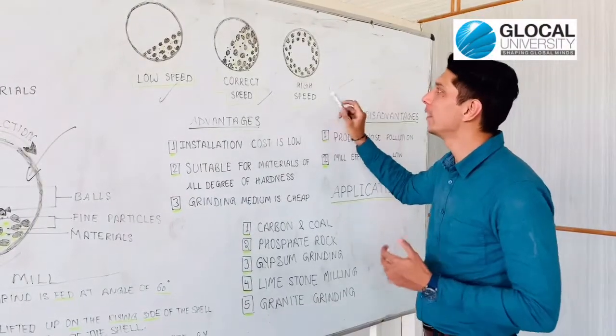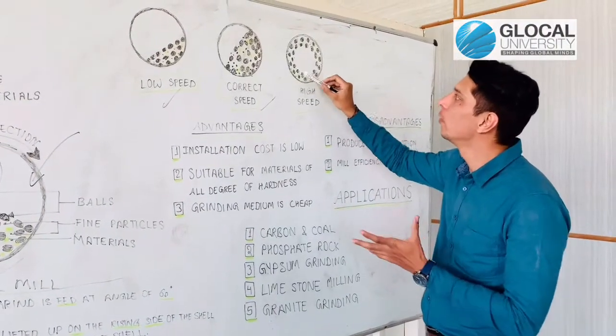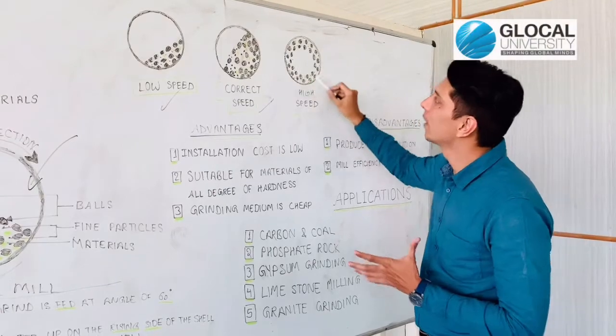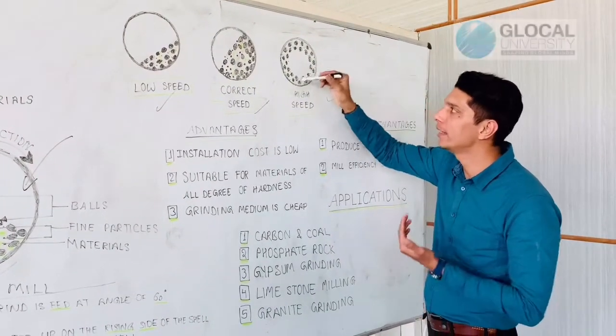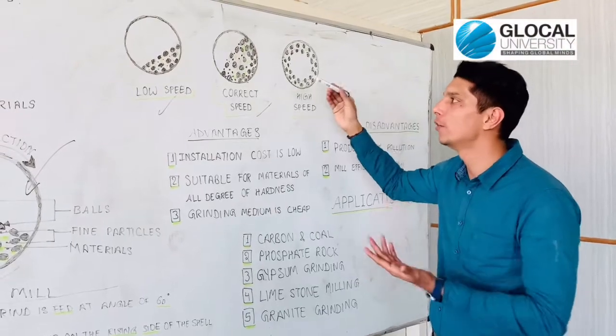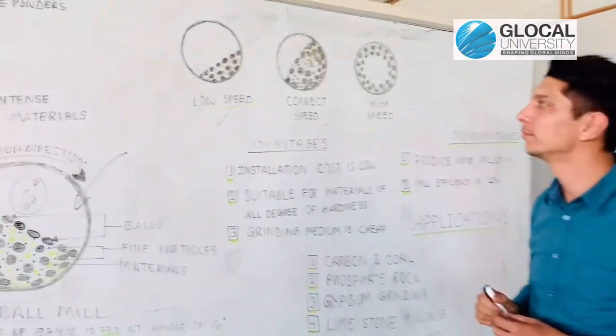If the speed is very high, the ball is moving on a circular path. The ball will not fall on the material, so the size reduction process will not happen.